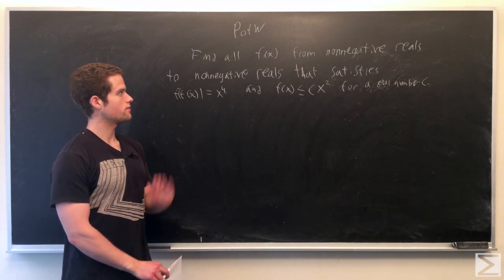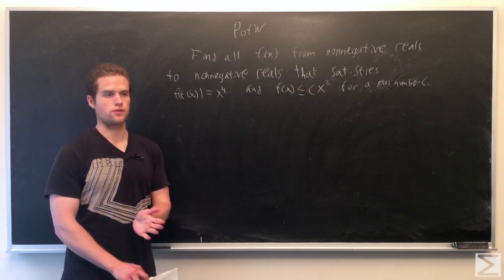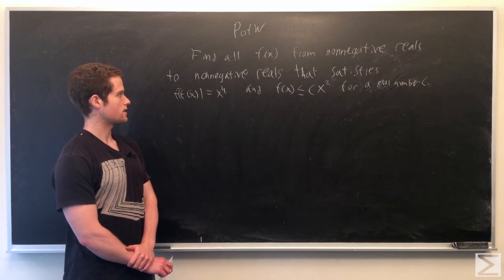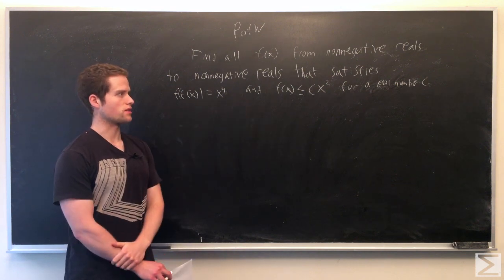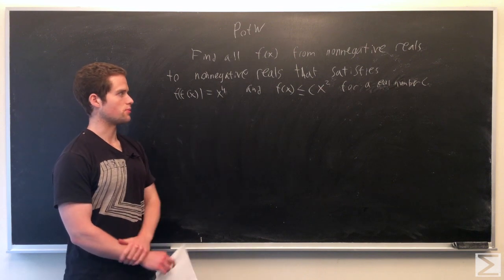And it takes the non-negative reals and sends them to the non-negative reals. We're also given that it satisfies f of f of x equals x to the 4th, and f of x is less than equal to cx squared for some real number c. Clearly, c has to be positive.